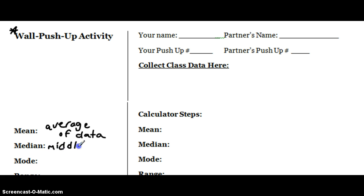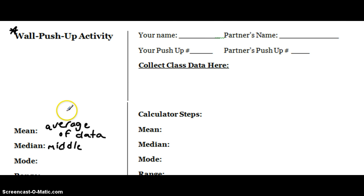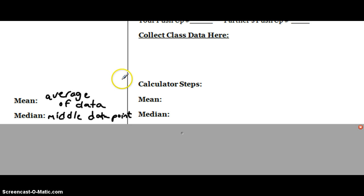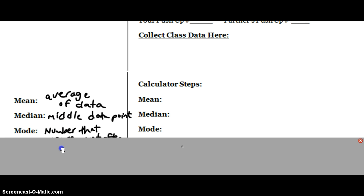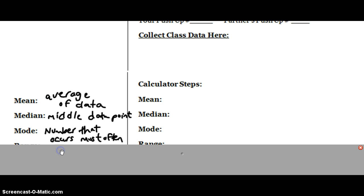To find the median, we line up our data from the least number to the greatest. If it's an odd number of data points, the median would be the middle number. If it's an even number of data points, we take the two middle numbers and average them — add them and divide by two. The mode is the number that occurs most often in the data.